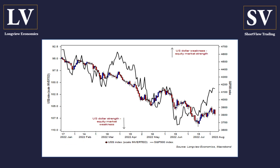On top of that, the dollar rallied on Friday — the dollar index up 0.9% on the session. In the past week, you can just see the dollar has been making higher highs and higher lows. The scale on this chart is inverted. The dollar, of course, remains reasonably well inversely correlated with US equities. So both the rates market and the dollar are beginning to question the near-term uptrend in equities.